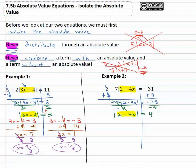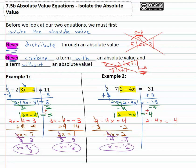Now the absolute value is alone, so we know what is inside the absolute value must be either positive or negative four. Two minus four x equals positive four, and two minus four x equals negative four, and we can solve these equations. Subtracting two from both sides gives negative four x equals two, and dividing by negative four gives x equals negative one-half for our first solution. In the second equation, subtracting two from both sides gives negative four x equals negative six, and dividing by negative four gives x equals positive three-halves.